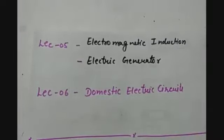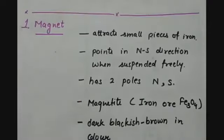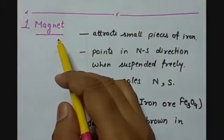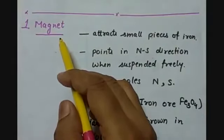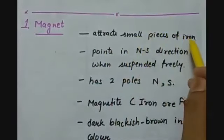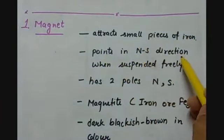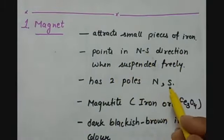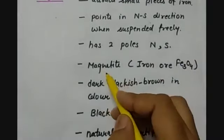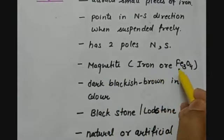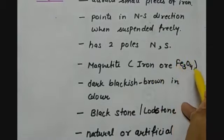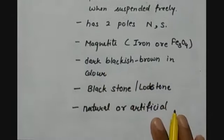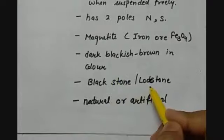Let us begin with the first topic: magnets. We all know what magnets are. A magnet is a substance that attracts small pieces of iron. It points in the north and south direction when suspended freely. It has two poles, north and south. It is made up of magnetite, which is an ore of iron — Fe₃O₄. It is dark blackish brown in color, and that is why it is also called black stone or loadstone.